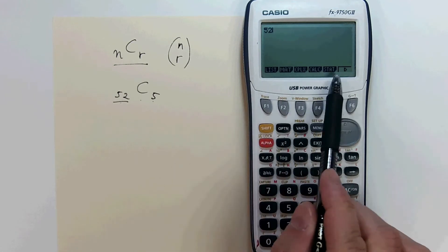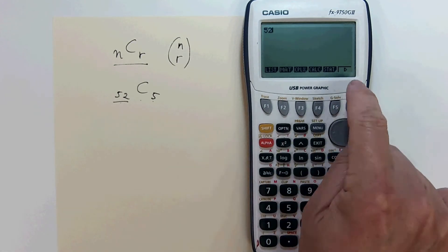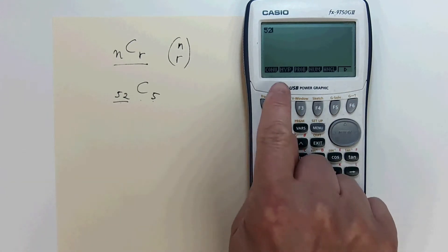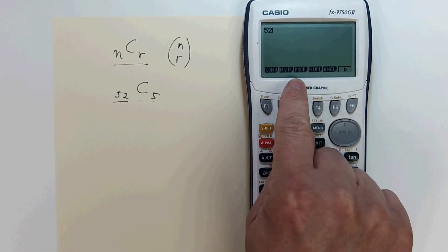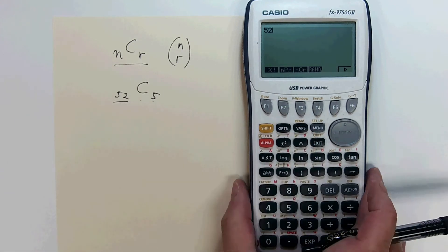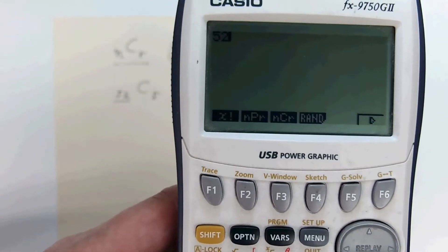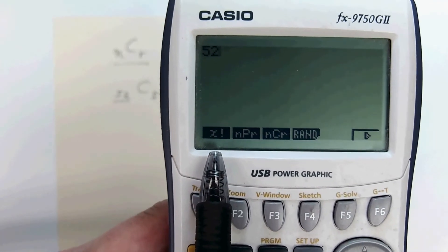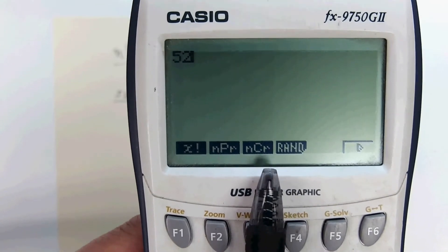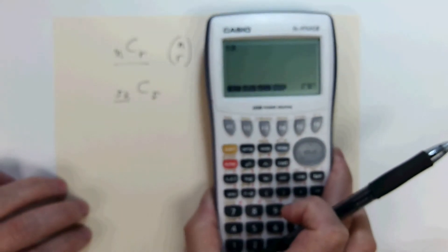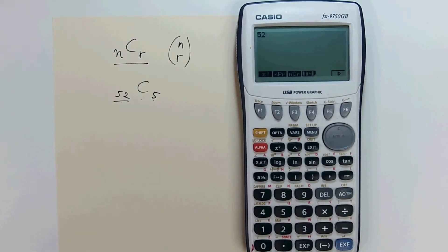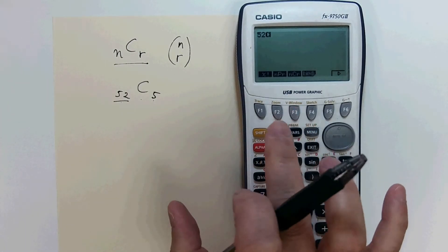We don't see probability. Press the arrow on F6 to move to the next list. Here we go. Probability on F3. Press F3. Within probability, we have x factorial, NPR, NCR, and a random number generator. We want NCR, so press F3.